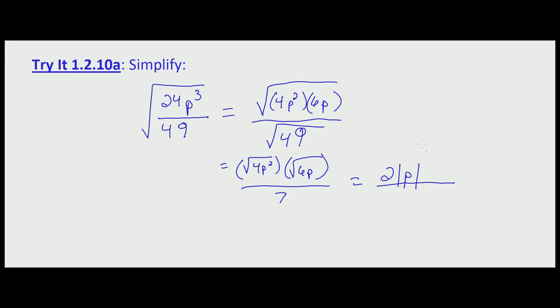And we're still left with the square root of 6p, and that's all over 7.